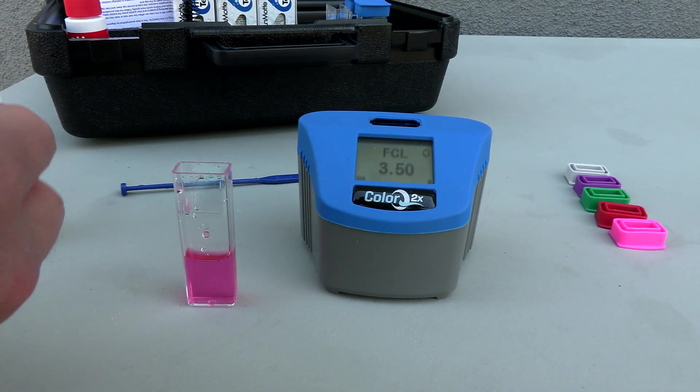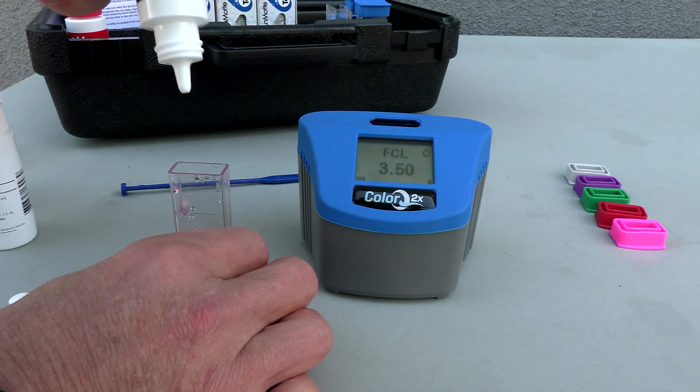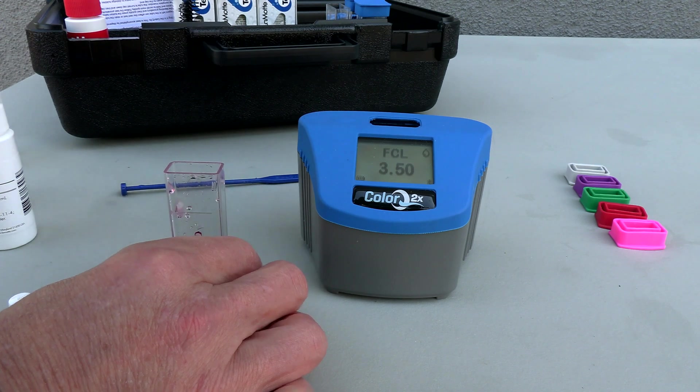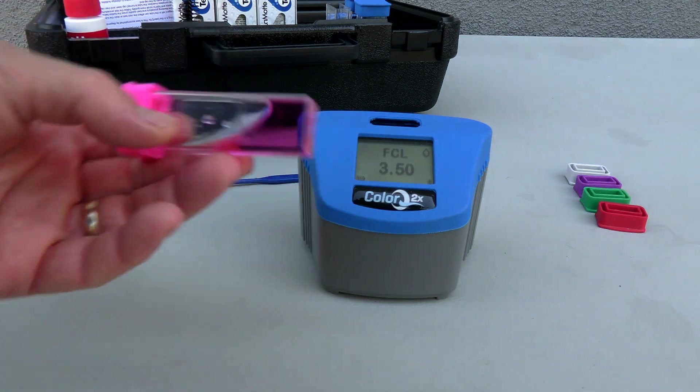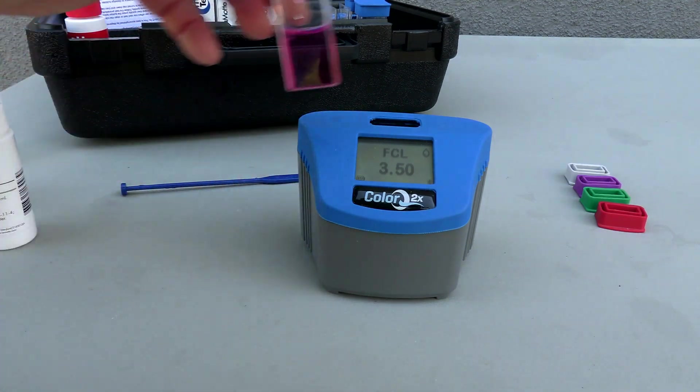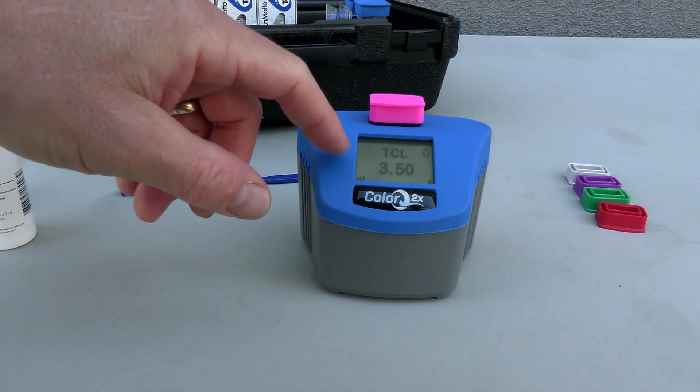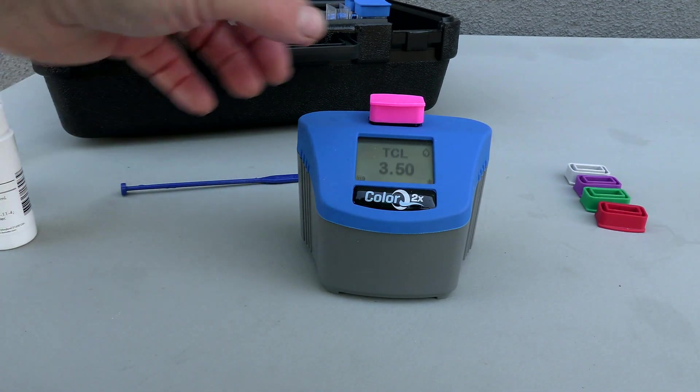To get the total chlorine you're going to use the DPD3. You're going to use the same water sample here. You're going to add five drops, go ahead and put the pink cap on and invert it. The total chlorine is 3.5. There's no combined chlorine here.